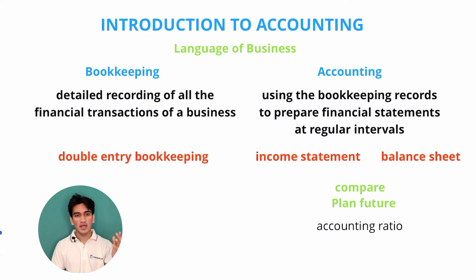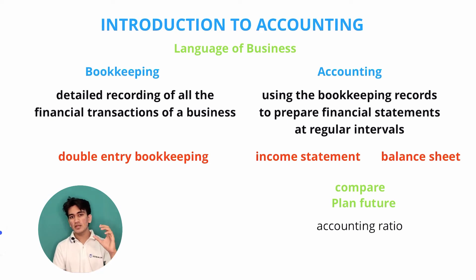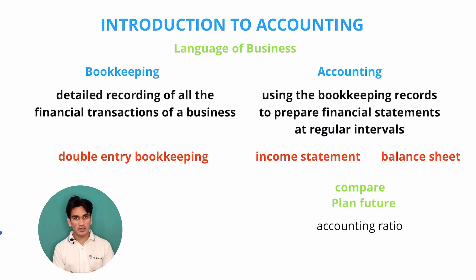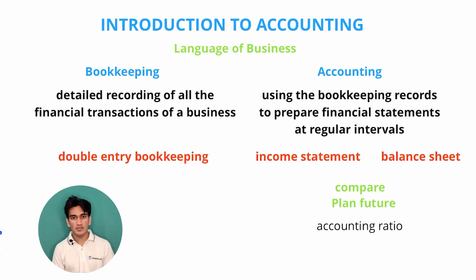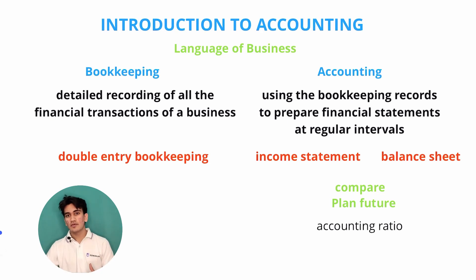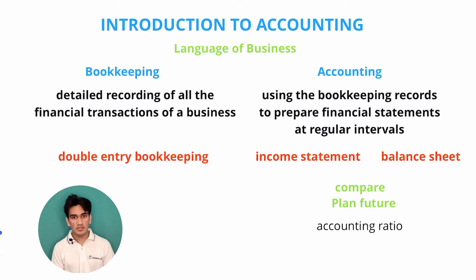These bookkeeping records help us compare the performance of a business with other businesses. For example, I look at Toyota's financial statements, see its performance, and compare with competitors in the same industry such as Tata, Hyundai, or Audi. Toyota might have made a certain profit while Audi made more or Tata made less — so we can compare performances. Note these were only examples, not real figures.